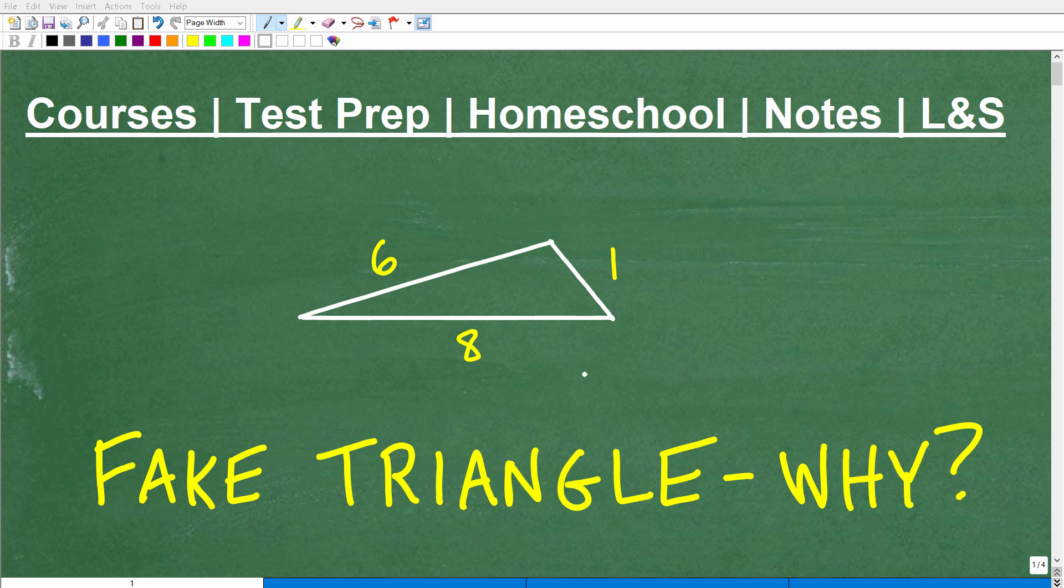Okay, so what do we have here? Well, it looks like we have a triangle, but I'm making a bold statement here. I'm saying that this is a fake triangle. I'm saying that this is impossible. So what am I actually saying? Well, I have what appears to be a triangle, and this side here is 1, this is 8, and this is 6. But I'm saying this is not possible, i.e. this would be an imposter. This is not a real triangle. It's a fake triangle, but why?